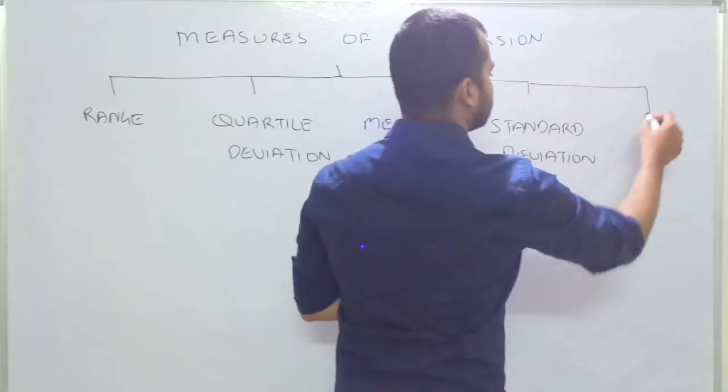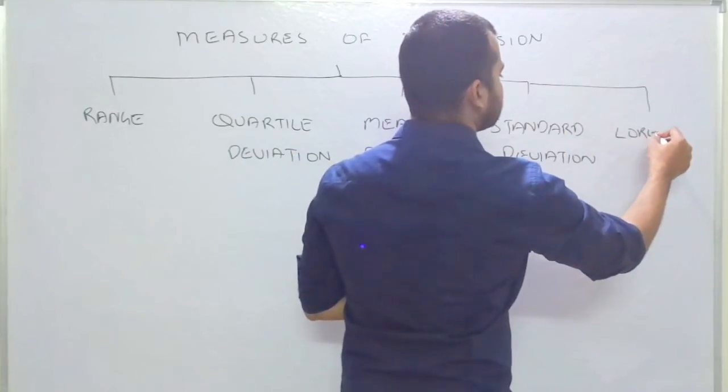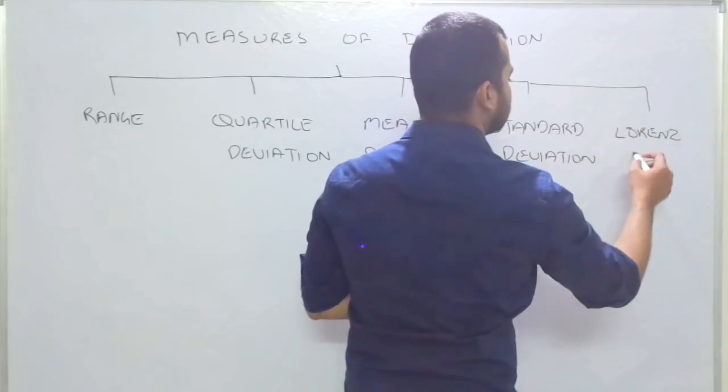And the last one is a graphical method known as a Lorenz curve.